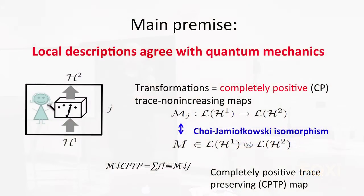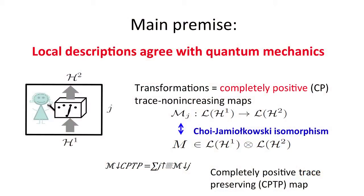The main premise of this formalism is that local descriptions in the labs agree with quantum mechanics. What I mean is that within a lab we have the laws as we know them. In technical terms, the transformations that Alice can perform are completely positive trace non-increasing maps from the linear operators on the input Hilbert space H1 to the linear operators of the output Hilbert space H2. The two Hilbert spaces do not need to have the same dimension because they can use ancillas or discard some systems. There is some outcome observed which is an index of the CP map. When you add up all these individual maps you have to get something which is a completely positive trace preserving map, CPTP map.